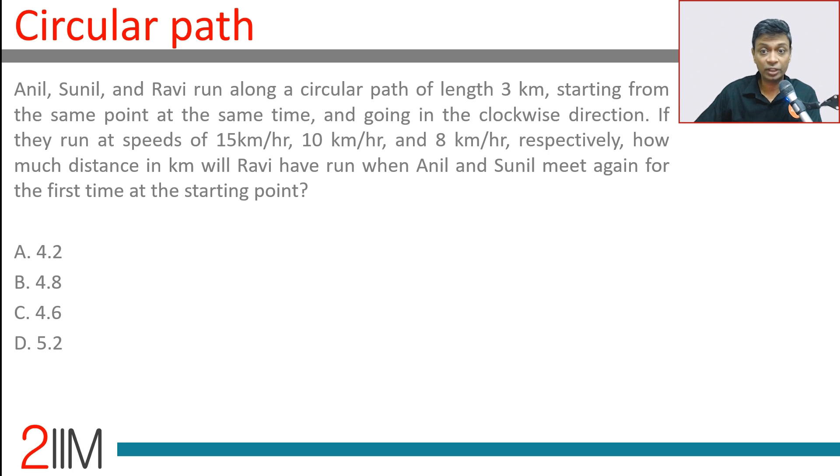Anil, Sunil and Ravi run along a circular path of length 3 kilometers starting from the same point at the same time and going in the clockwise direction.